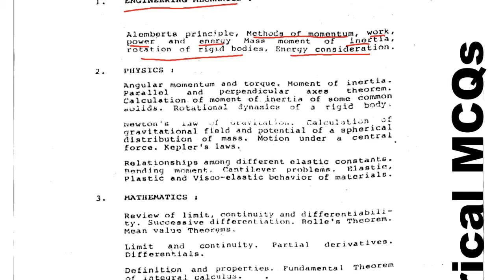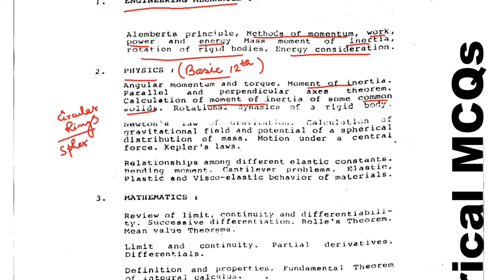The next chapter is Physics — basically the physics you have already studied in your 12th standard. Topics include angular momentum and torque, moment of inertia, parallel and perpendicular axis theorem, calculation of moment of inertia of common solids like circular ring, sphere, etc., rotational dynamics of a rigid body, Newton's law of gravitation, calculation of gravitational field and potential of a spherical mass distribution, motion under a central force, and Kepler's law — which is very important.